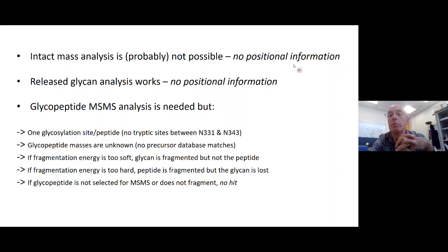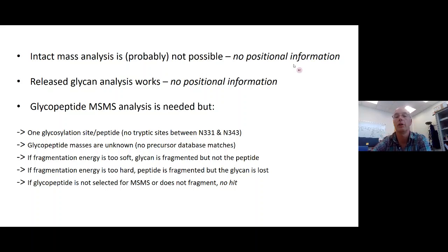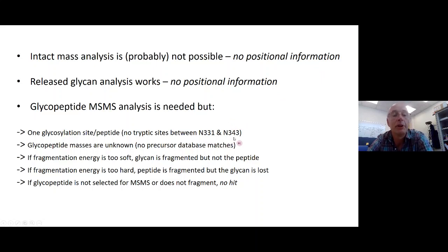There are some problems associated with glycopeptide analysis. You need to have one glycosylation site per peptide, and if all you use is trypsin, this won't do the job because there are no tryptic sites between certain glycosylation sites on spike. You'll know the peptide mass but not the glycan mass, so your glycopeptide masses are effectively unknown — you can't do precursor database matching. You'll have to do MS-MS fragmentation, which has its own problems: if fragmentation energy is too soft, we fragment the glycan but not the peptide; if too hard, we fragment the peptide but lose the glycan.